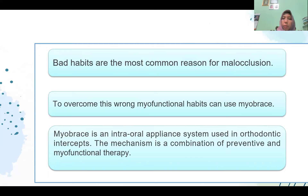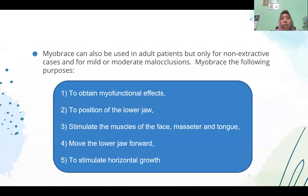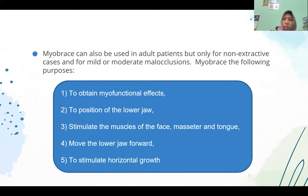Bad habits are the most common reason for malocclusion. To overcome myofunctional habits, one can use myobrace. Myobrace is an intraoral appliance system used in orthodontic interception. The mechanism is a combination of preventive and myofunctional therapy. Myobrace can also be used in adult patients, but only for non-extractive cases and for mild or moderate malocclusion. The purposes of myobrace include: obtaining myofunctional effects on the position of the lower jaw, stimulating the muscles of the face, masseter, and tongue, moving the lower jaw forward, and stimulating horizontal growth.